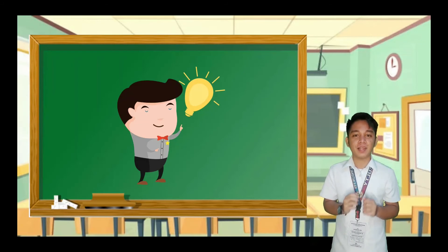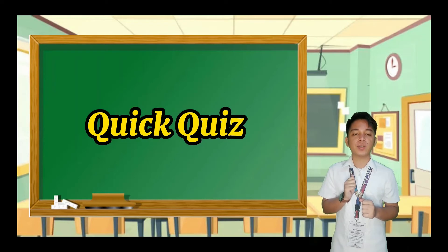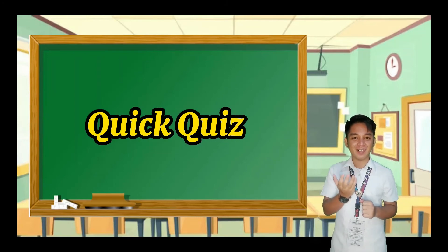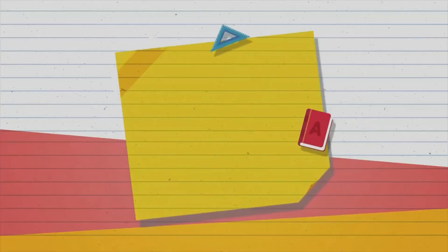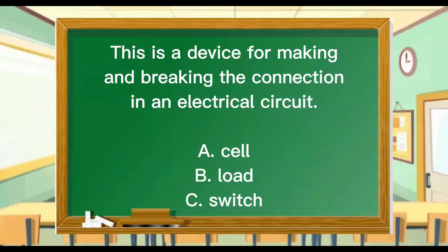This time, let's have a quick quiz. Kindly get a piece of paper and choose the correct answer from the given choices. Question 1: This is a device for making and breaking the connection in an electrical circuit. A cell, B load, C switch.